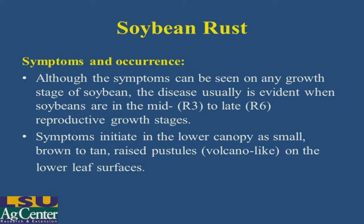As far as soybean rust symptoms and occurrence are concerned, the symptoms are very difficult to find in the field due to their small size. They begin on the lower leaves of the plant inside the canopy. In scouting for it, you must look within that particular canopy and look at canopies near tree lines where there is more moisture held for a longer period of time during the day.